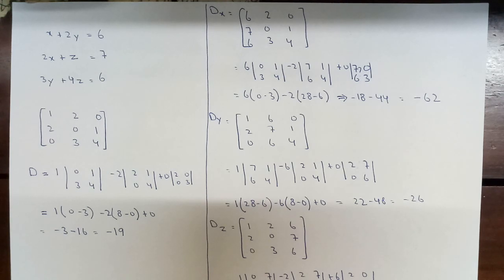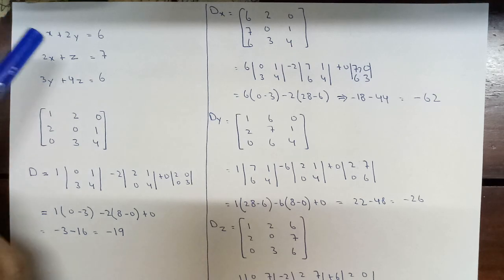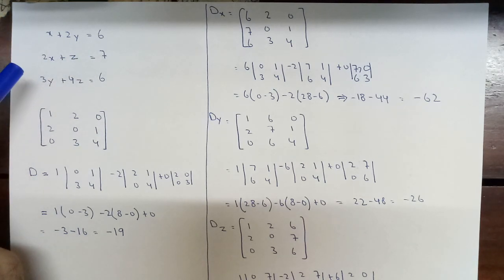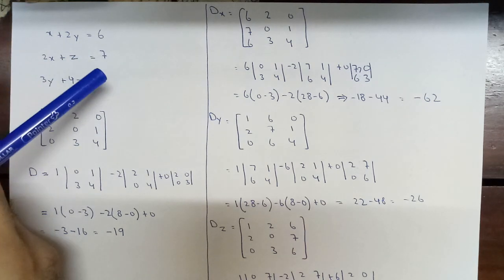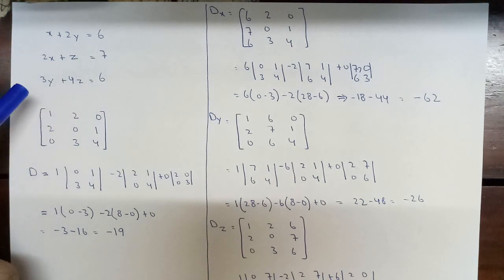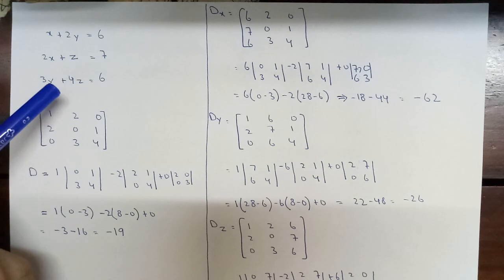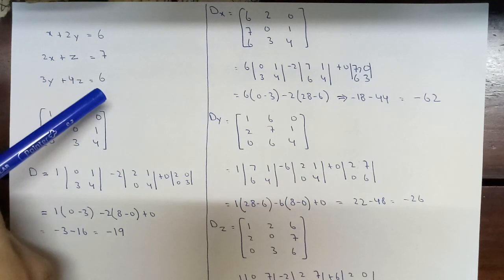Here we have three linear equations: x plus 2y is equal to 6, 2x plus z is equal to 7, and 3y plus 4z is equal to 6.